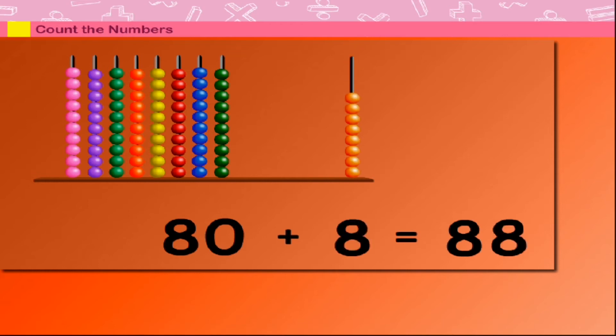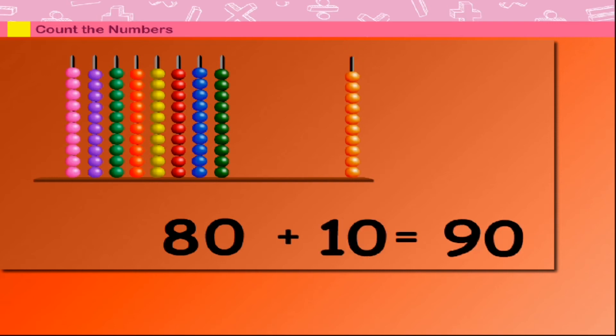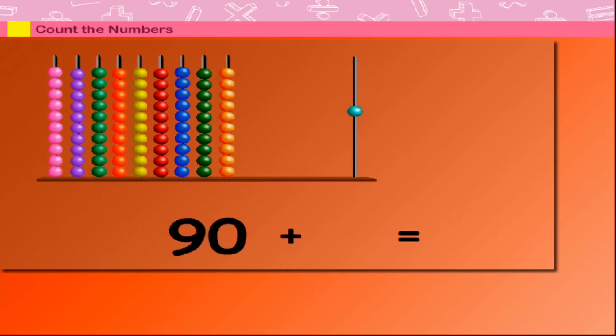80 plus 8 is equal to 88. 80 plus 9 is equal to 89. 80 plus 10 is equal to 90.